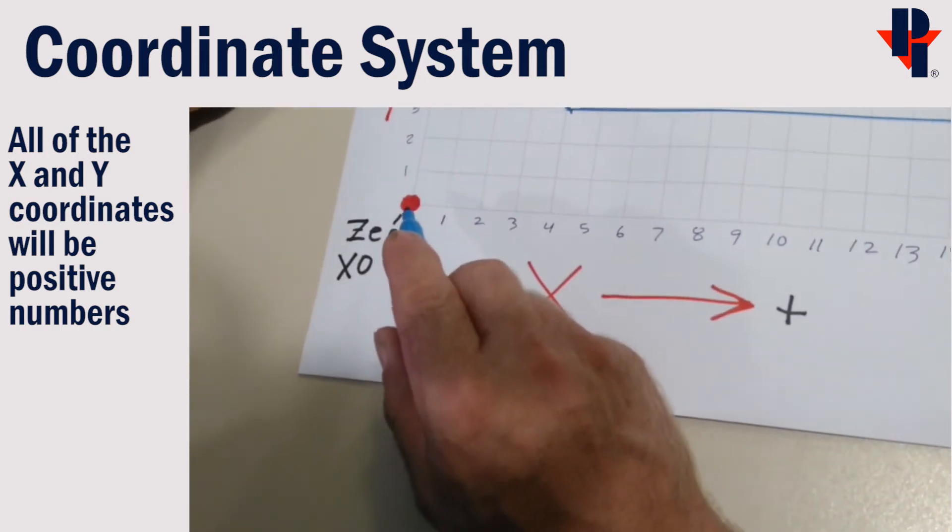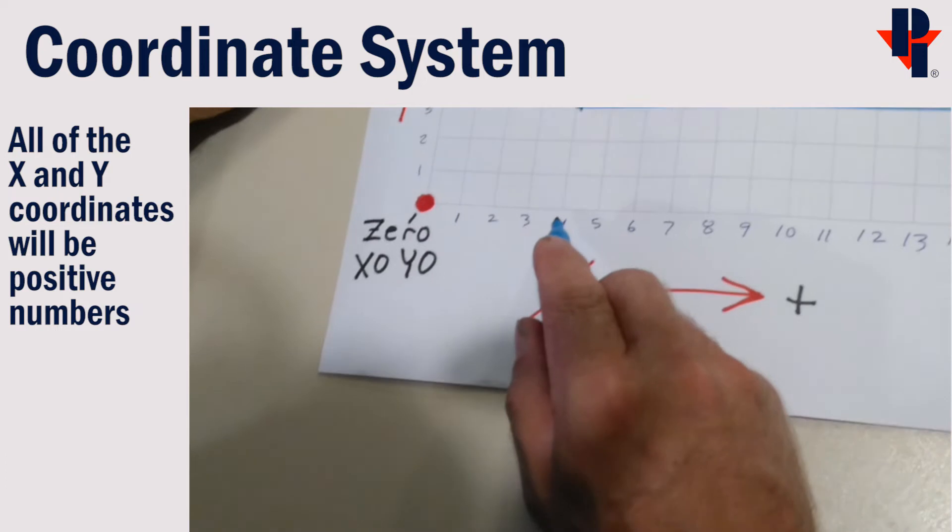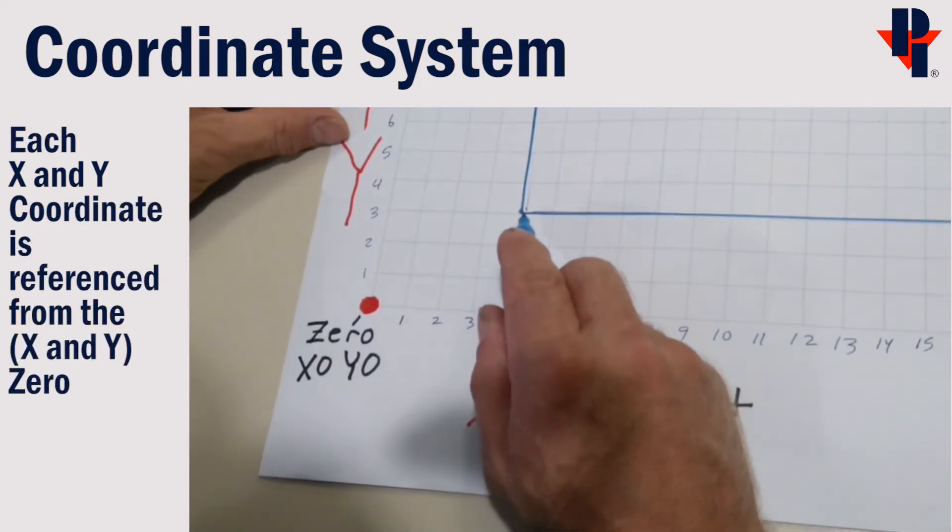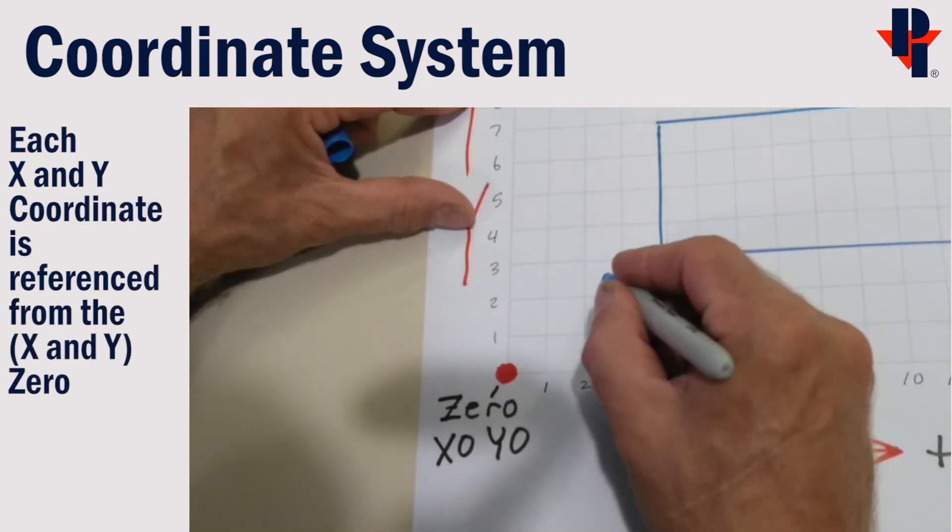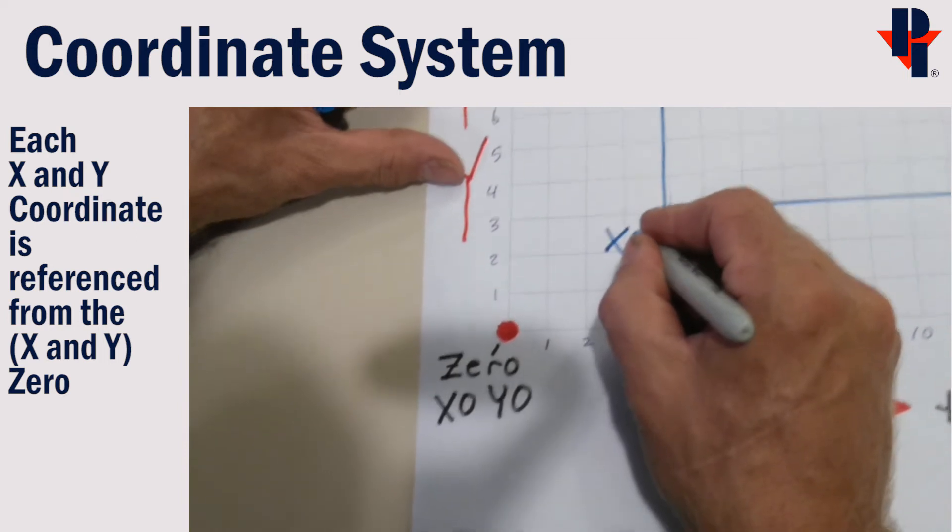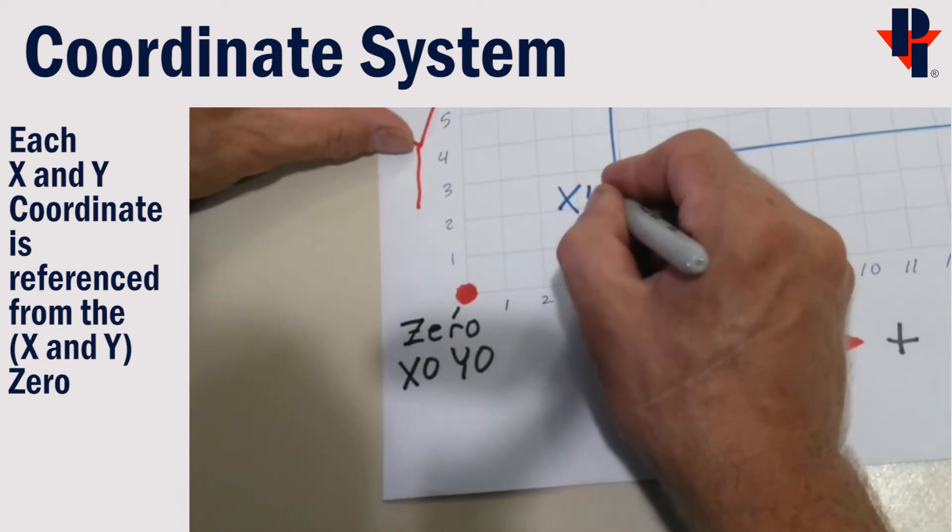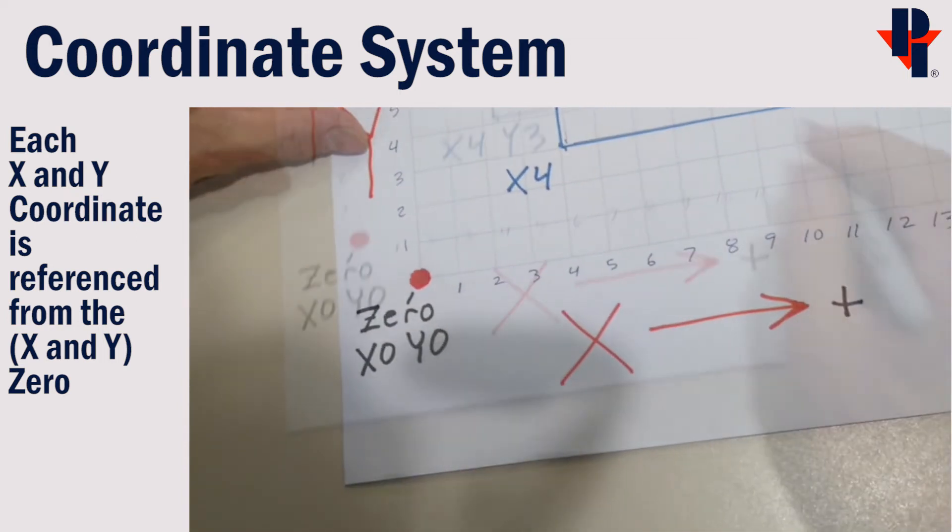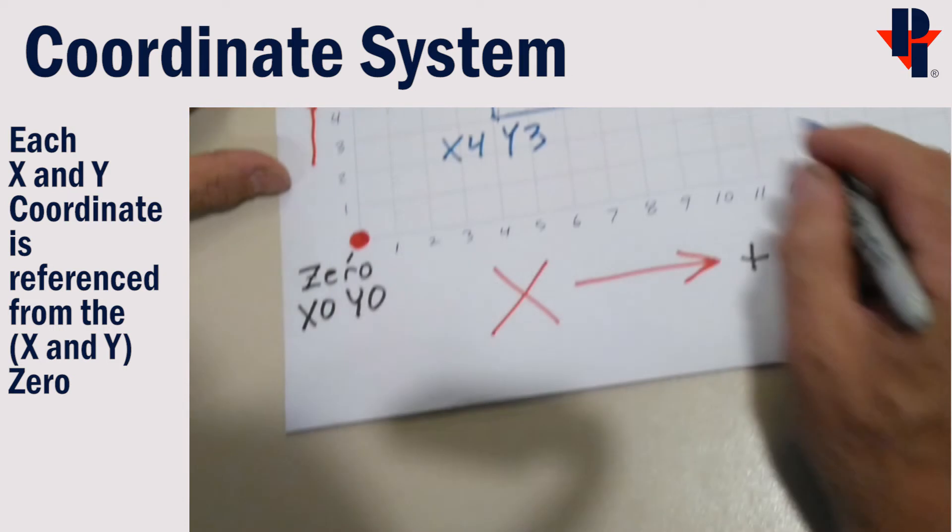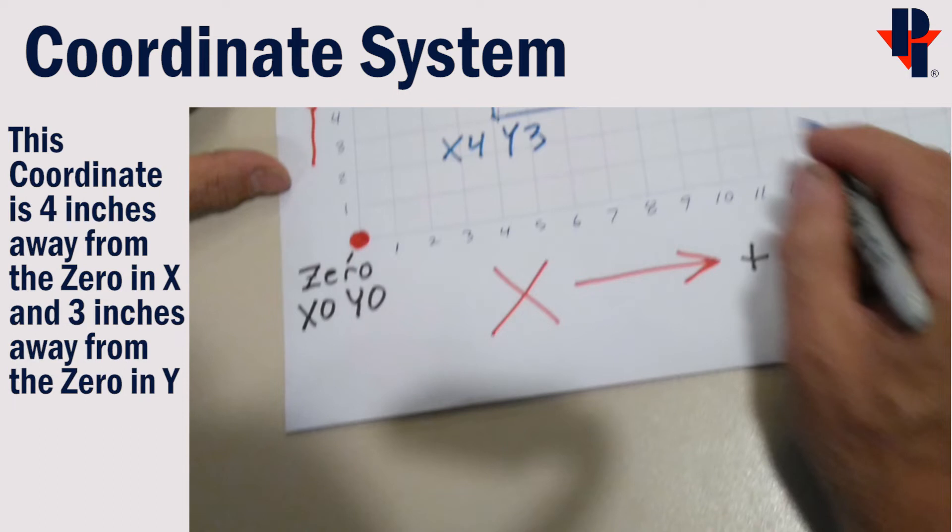Starting with the x, we'll identify or count how far away it is from the zero location. x is 4. Then we'll do the same in the y direction, counting how far away from the zero location. y is 3. So the lower left coordinates for our rectangle are x4, y3.